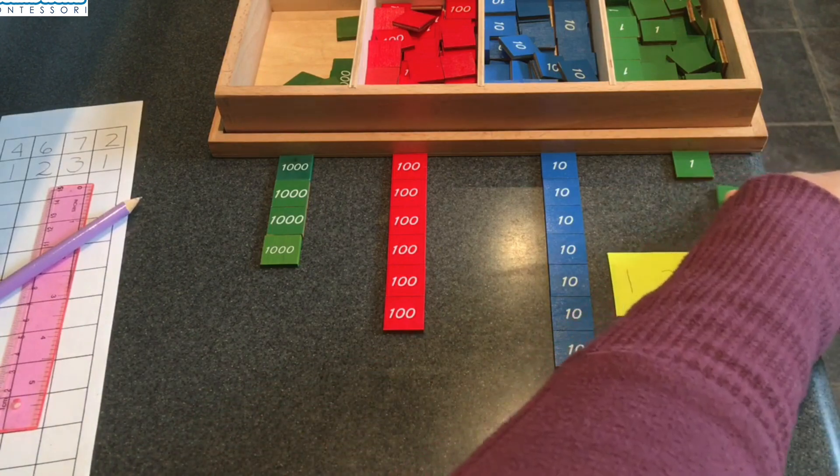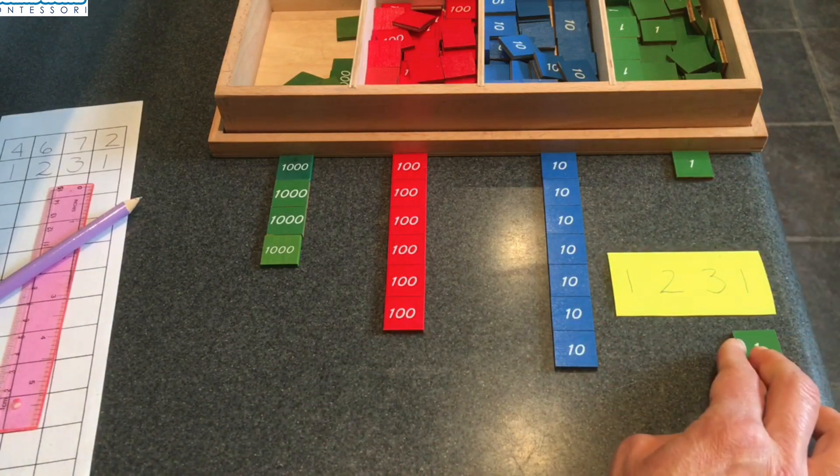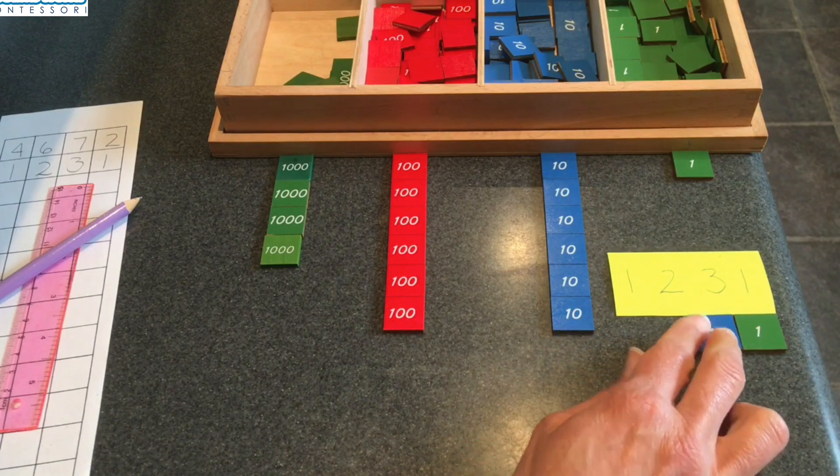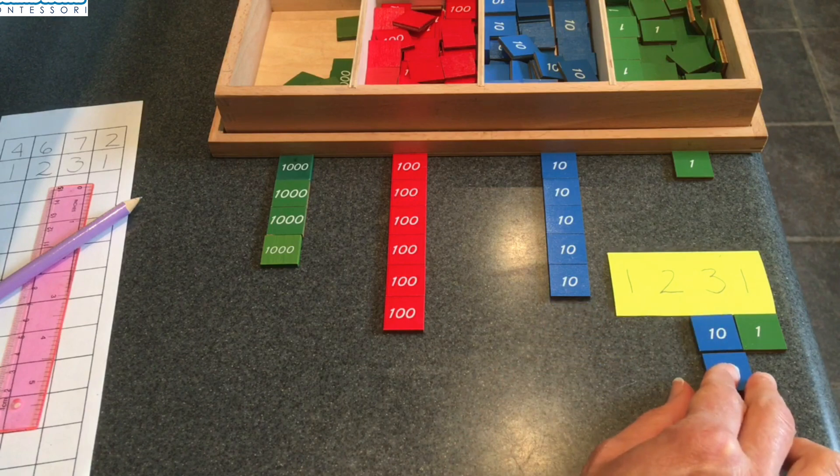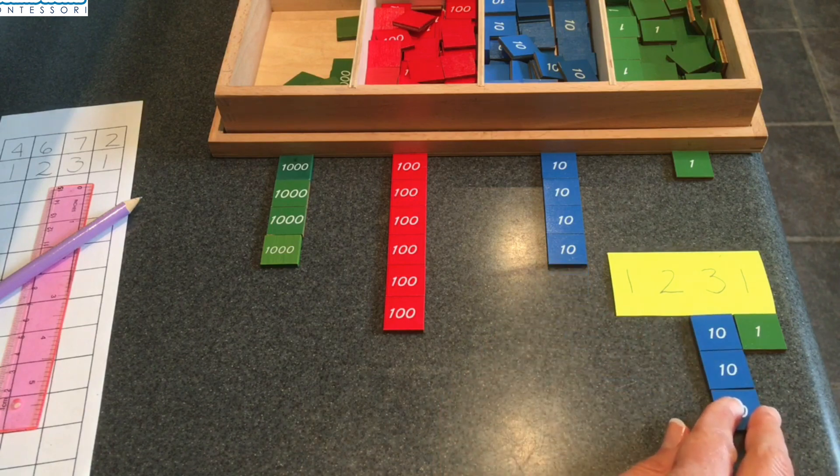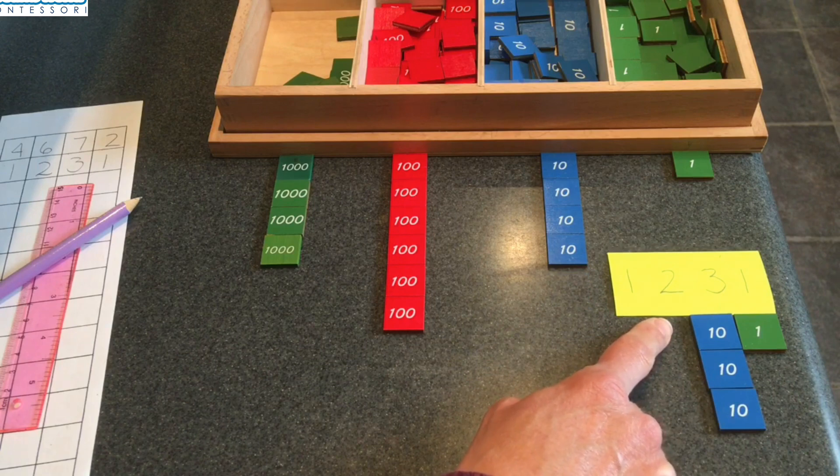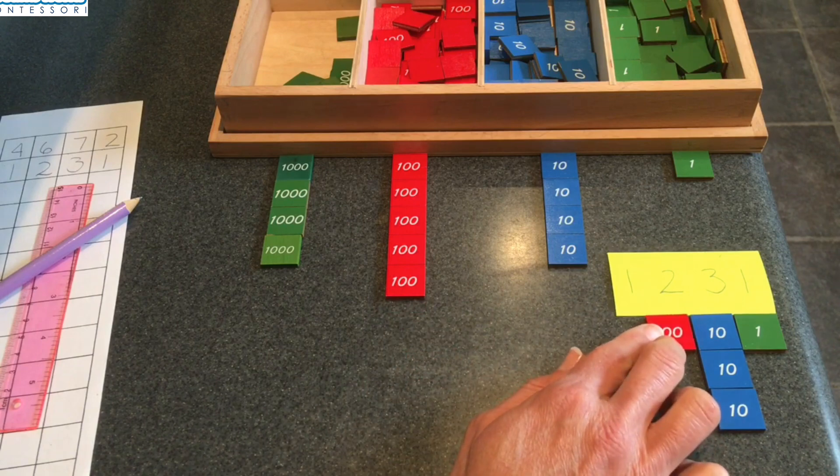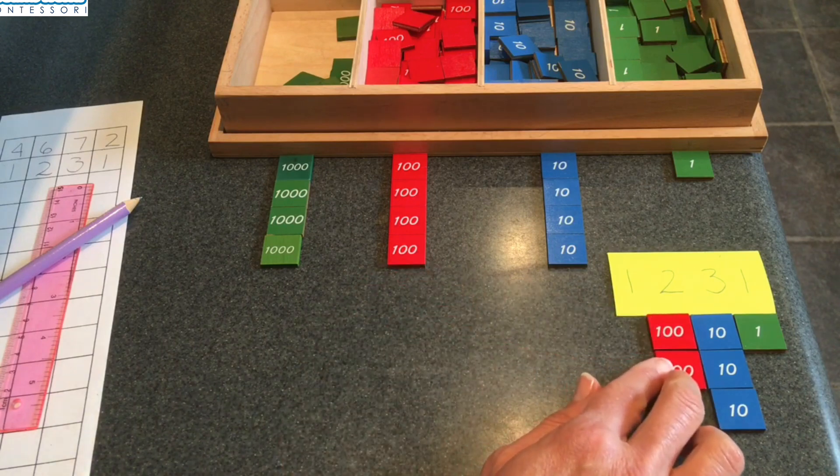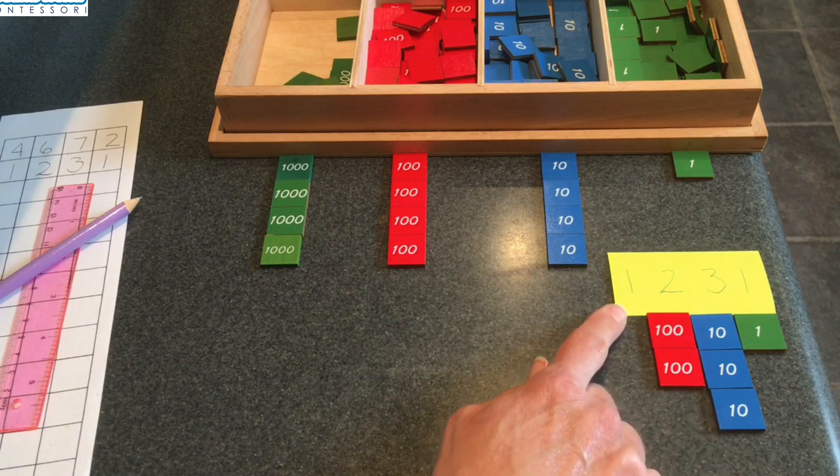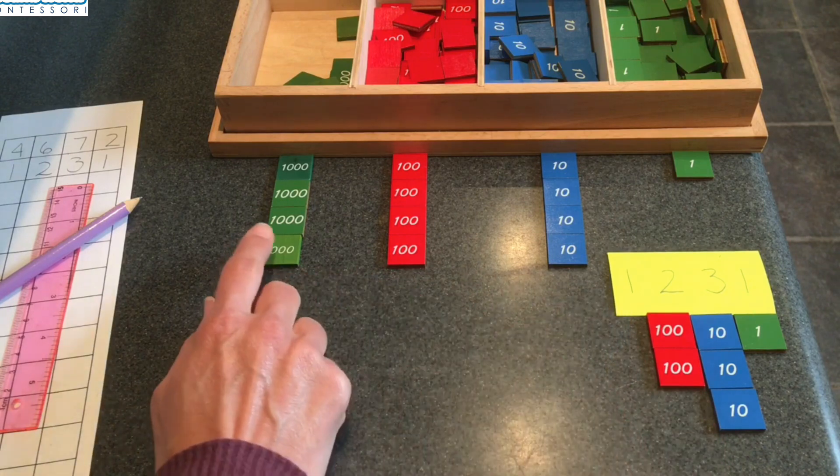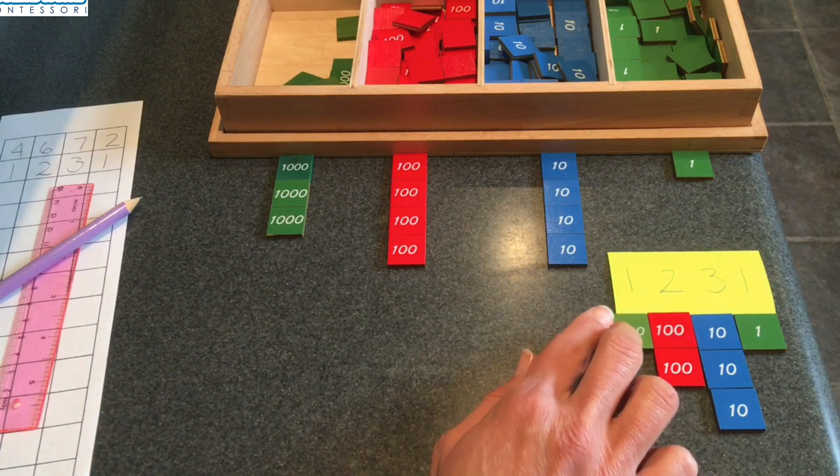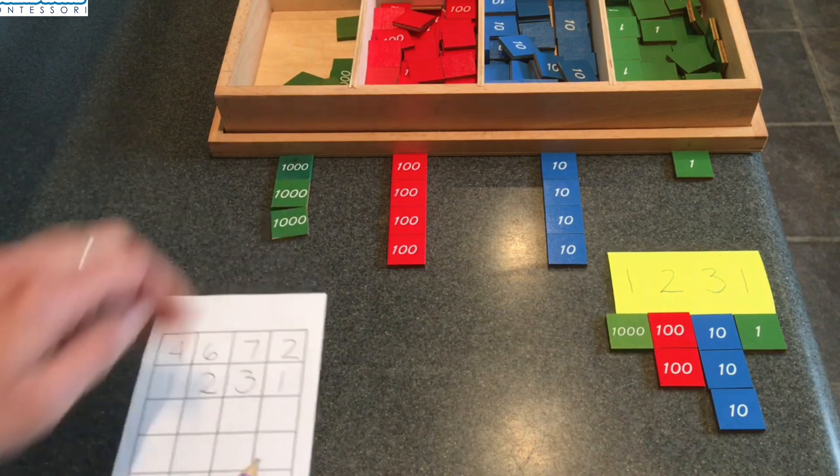I'll start with the units. How many units do I need? That's right, one unit. You can do this with me. I need three tens. One, two, three. And how many hundreds? That's right, two hundreds. One, two. And then how many thousands? You're right. I need one thousand. Okay.